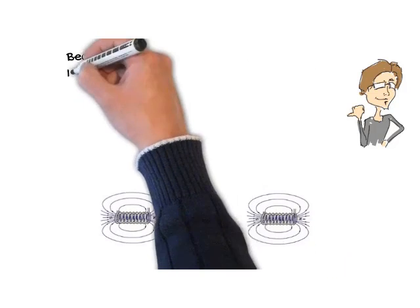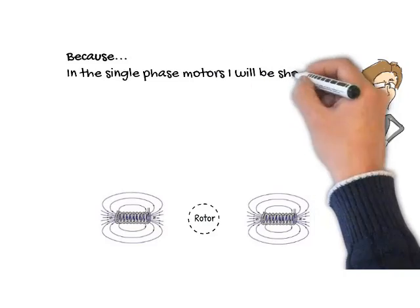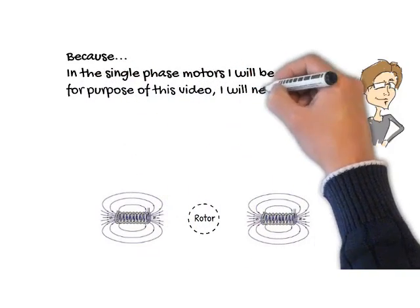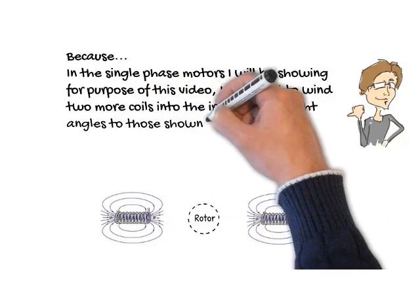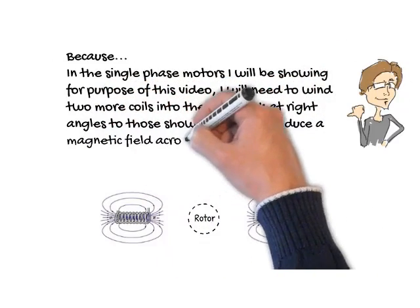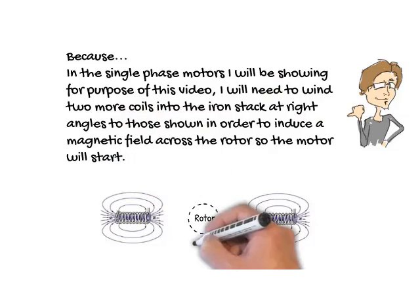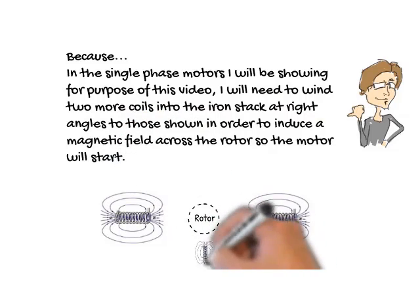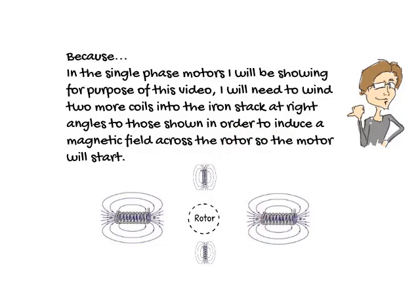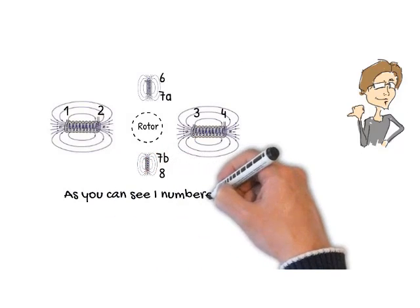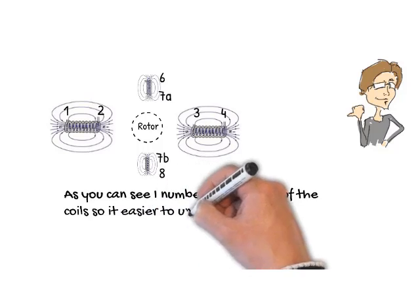Because this would cause one north and one south pole when we apply power. In the single phase motors I will be showing for purpose of this video, I will need to wind two more coils in the iron stack at right angles to those shown in order to induce a magnetic field across the rotor so the motor will start. As you can see, I numbered the ends of the coils so it is easier to understand.